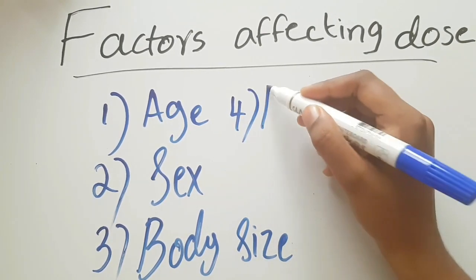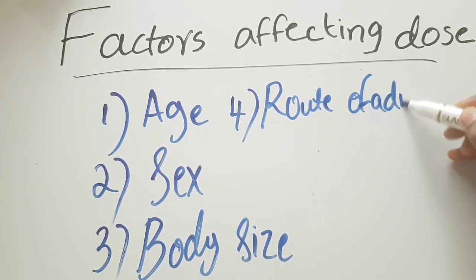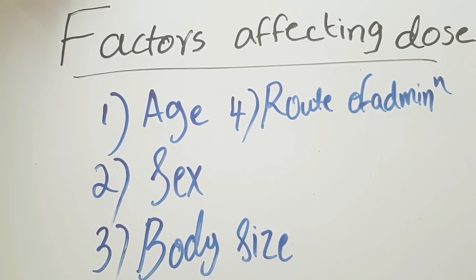Fourth one: route of administration. We know intravenous injection has 100% bioavailability, so their dose will be less than that of oral routes. In case of intravenous injection, the total drug reaches immediately to the systemic circulation. Hence, the dose is less in IV injection than through oral route or any other routes. In that case also, dose should be adjusted appropriately.